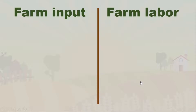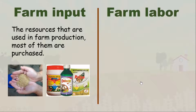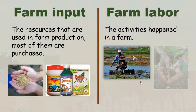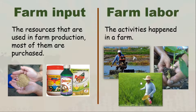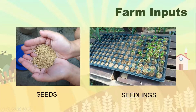Bago tayo mag-estimate, kailangan pamilyar muna tayo sa dalawang uri: farm input at farm labor. Ang farm input ay ang resources that are used in farm production — this is most commonly purchased. While farm labor are the activities that happen in a farm. Ang farm input ay yung mga ginagamit natin sa farm production — madalas dito ay consumables na ating binibili, samantalang ang farm labor ay yung mga nangyayari sa ating farm or garden.